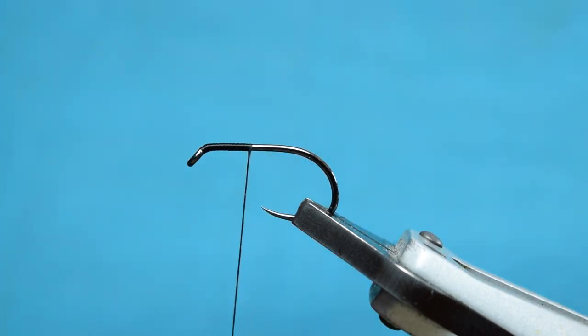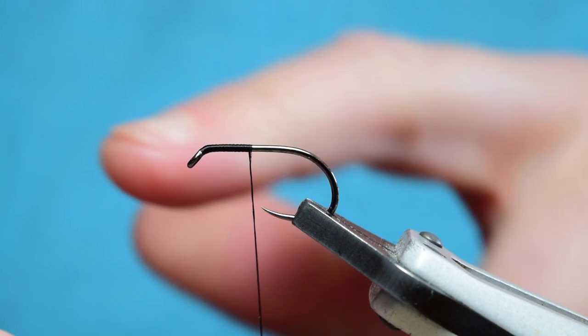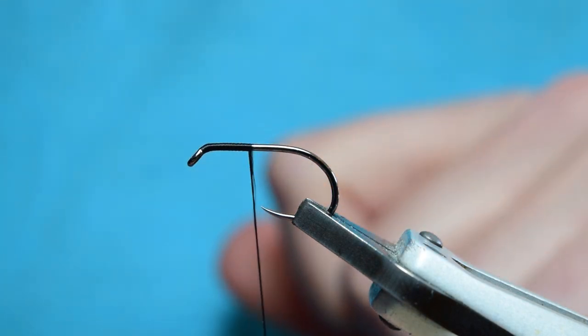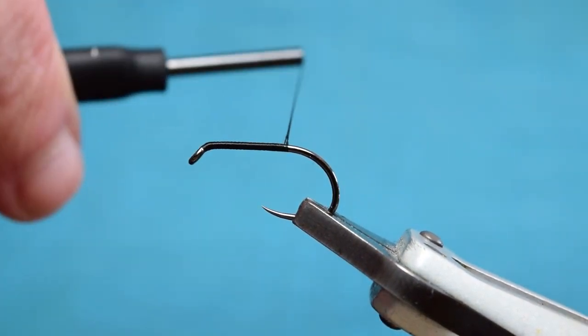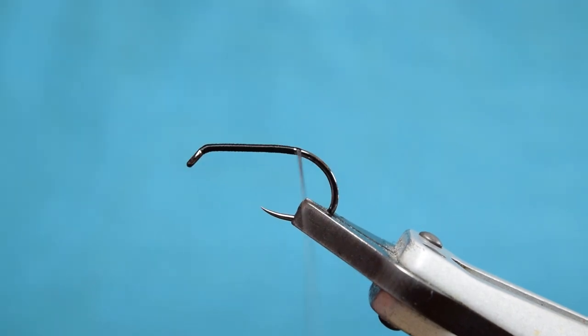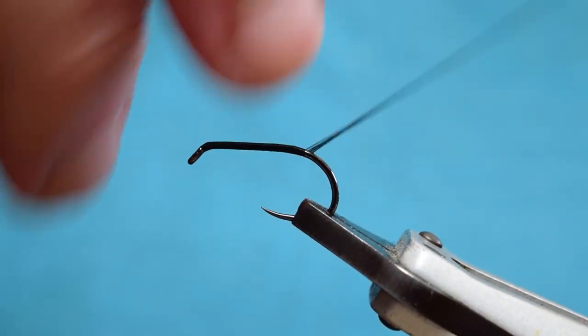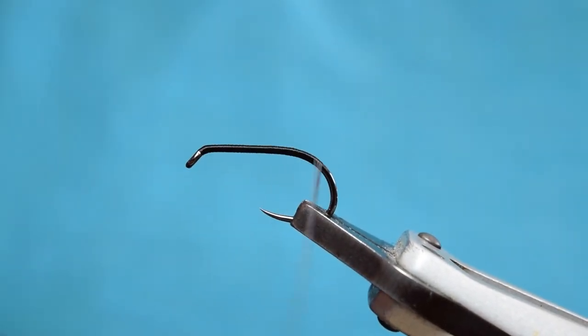Just around about halfway down the shank. As you can see, the thread's starting to get twisted. What I do is I'll spin the thread anti-clockwise because obviously I'm wrapping clockwise, so I'm spinning anti-clockwise to then loosen it. I'm going to take this thread down slightly around the bend just to get a little bit of curvature.